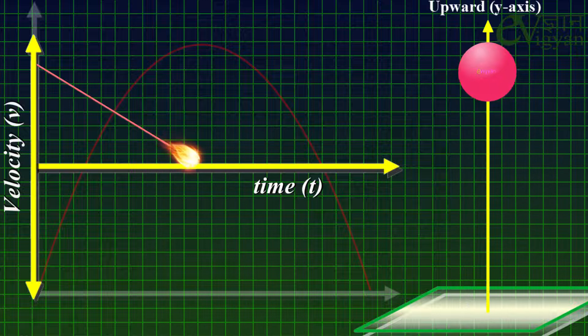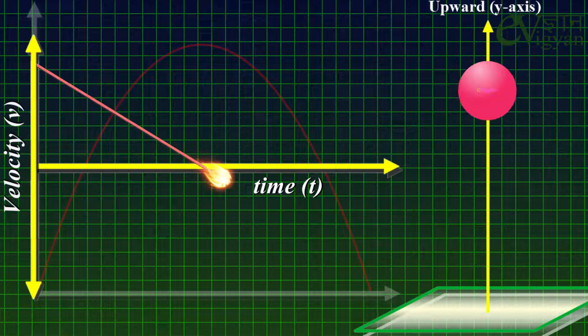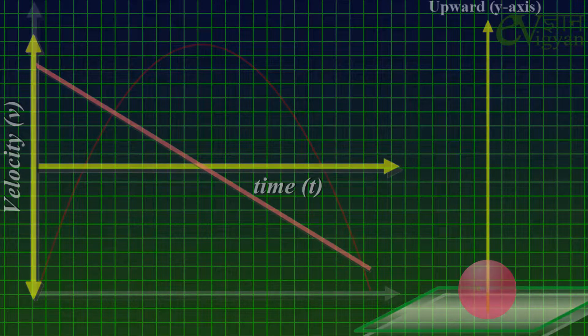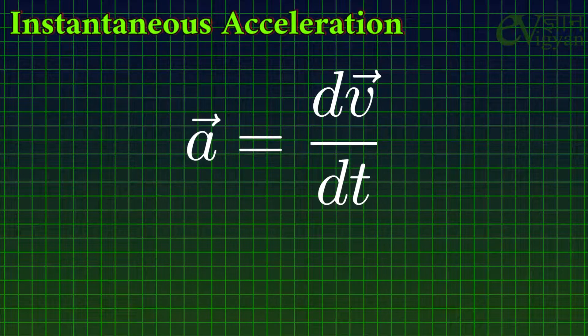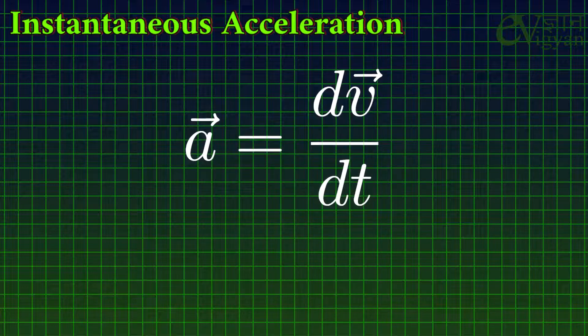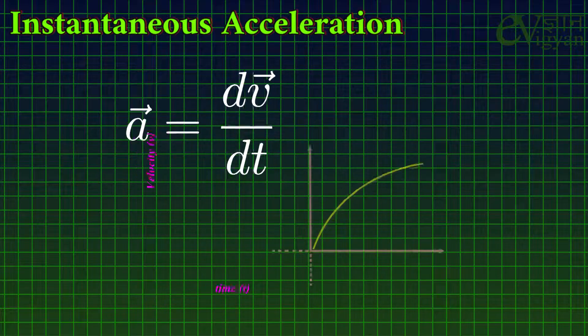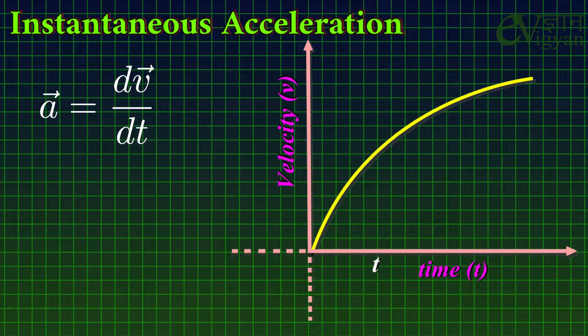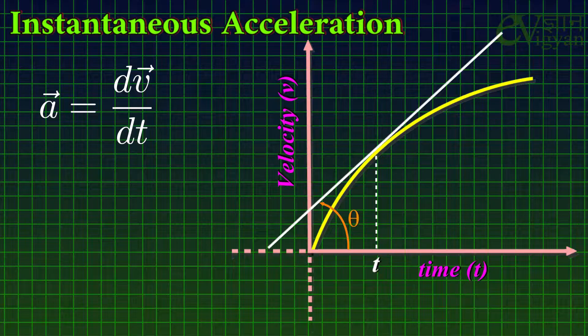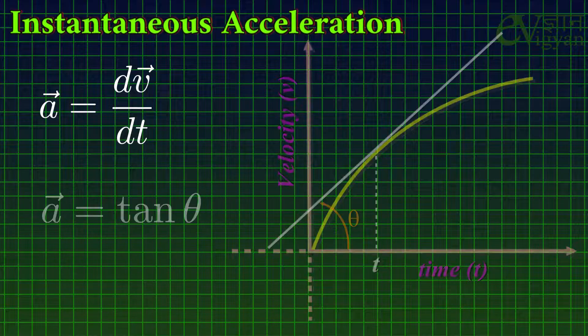You can notice that the velocity of the ball is continuously changing, and hence the ball must have some acceleration. The acceleration of the ball at any time t is known as instantaneous acceleration, given by the equation a = dv/dt. That is, it is the rate of change of velocity with respect to time, and hence it is the slope of the tangent line on the curve in the velocity-time graph at that time t. If theta is the angle made by the tangent line with the time axis, then the instantaneous acceleration at any time t is a = tan(theta).